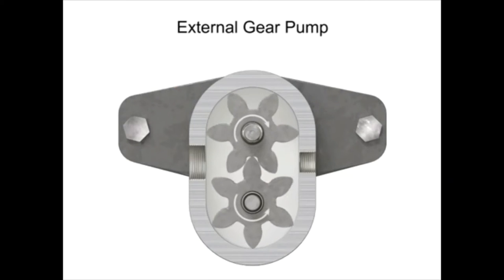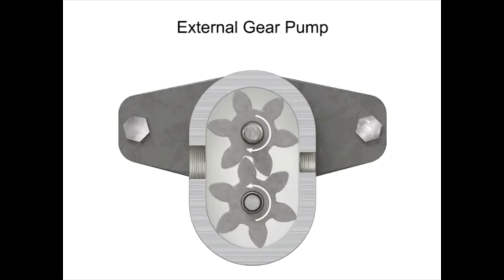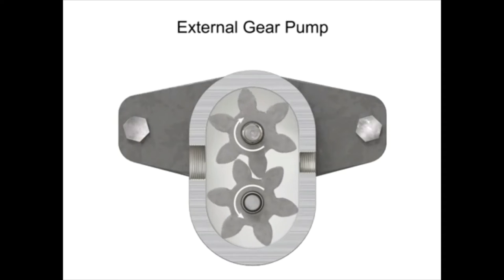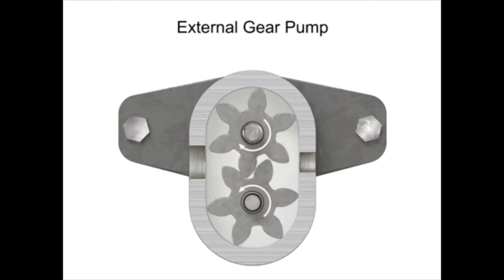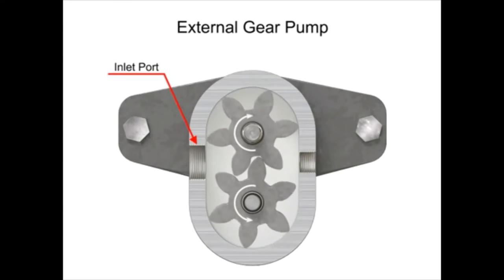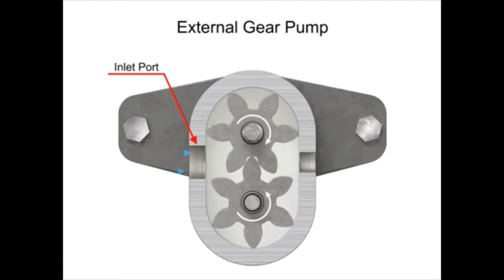As the gears rotate away from each other and come out of mesh, they create an expanding volume on the inlet side of the pump. This creates a vacuum at the inlet port allowing fluid to flow into the pump.